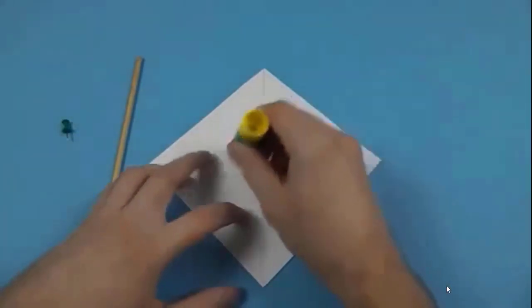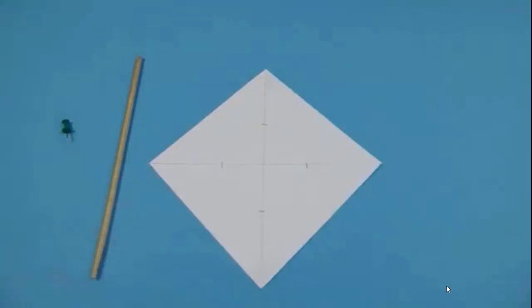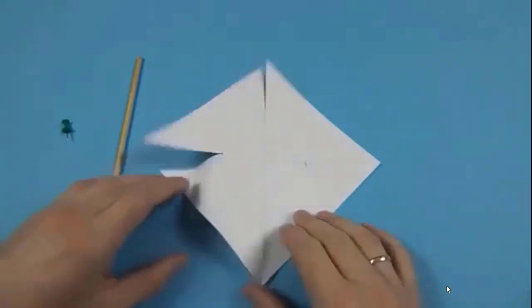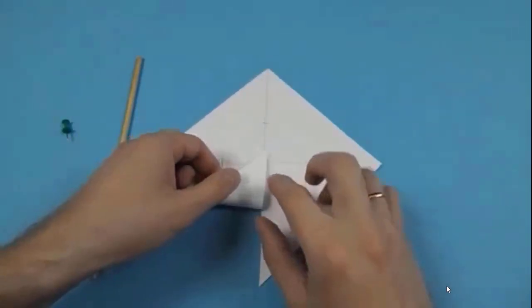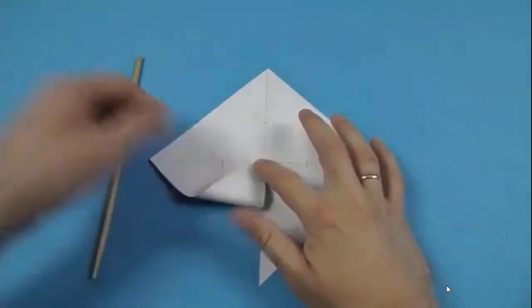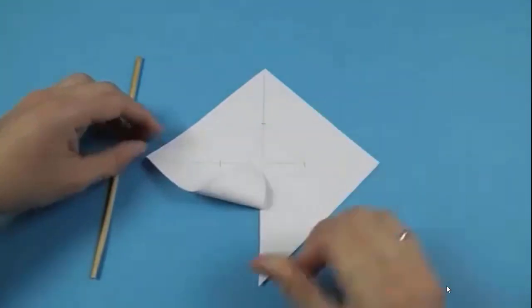Take glue stick and apply it on the paper. Now take one side and turn it inside and paste it.